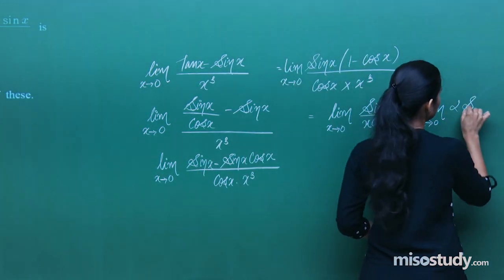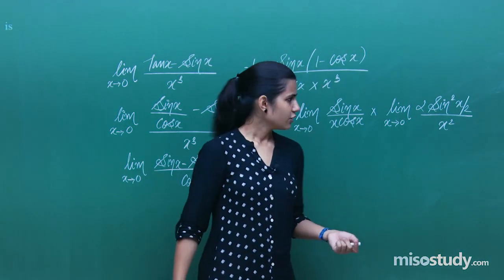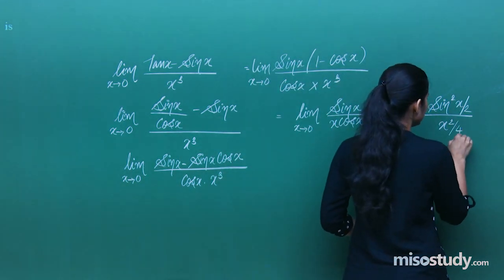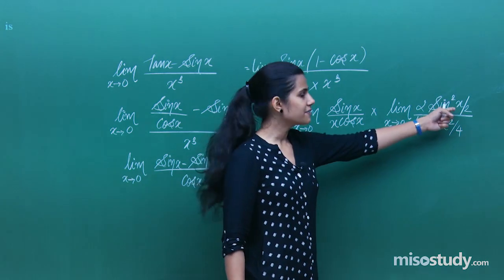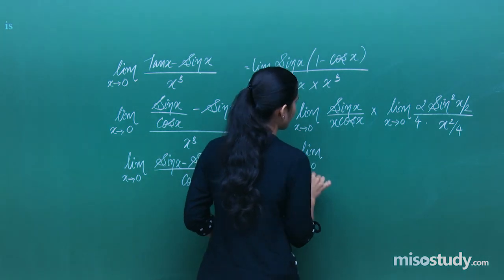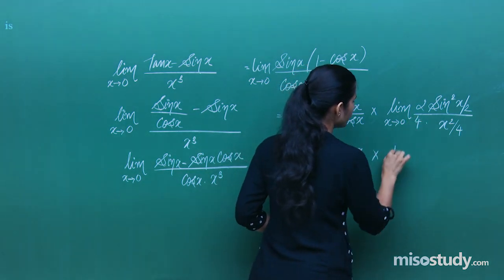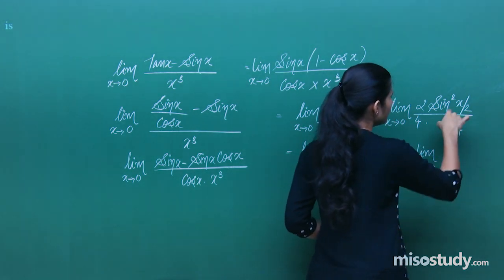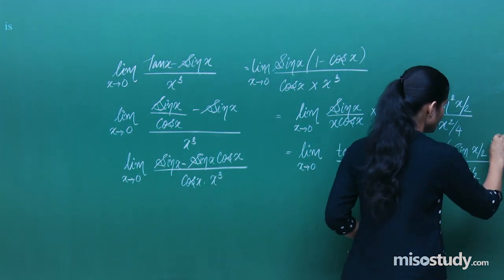Now (1 minus cosx)/x² equals 2sin²(x/2)/x². Using the standard limit sin(x/2)/(x/2) → 1, we divide and multiply by 4 to get sin(x/2)/(x/2) whole squared. So the expression becomes limit of tanx/x times (1/2) times [sin(x/2)/(x/2)]².